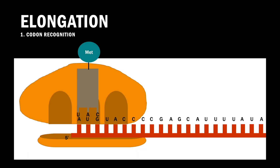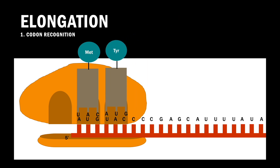Elongation starts with codon recognition. A charged tRNA with an anticodon complementary to the codon present in the A site of the large ribosomal subunit begins to enter the A site. This is then followed by peptide bond formation, whereby the amino acid attached to the tRNA in the P site will form a peptide bond with the amino acid attached to the tRNA in the A site, and will then be transferred to the tRNA in the A site.